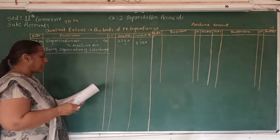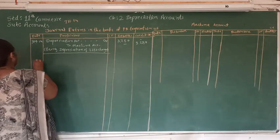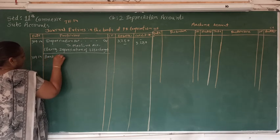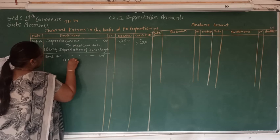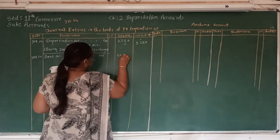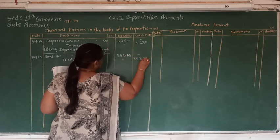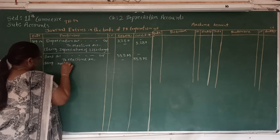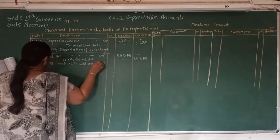The second journal entry we are going to pass will be for the selling of the machine. The journal entry will be: Bank Account debit to Machine Account on the same day, 30th September 2014. The amount we are going to receive from selling the machine — the selling price — is Rs. 55,575, being the amount received through bank.